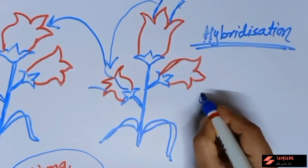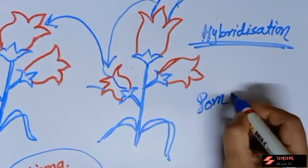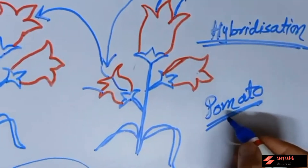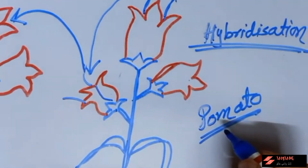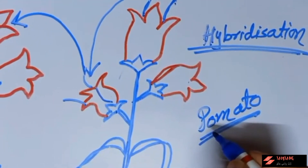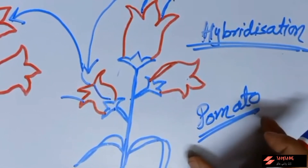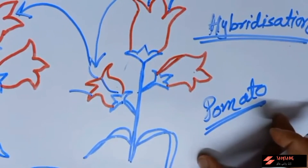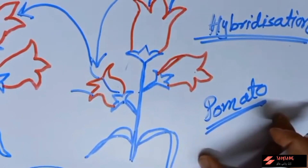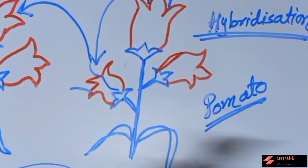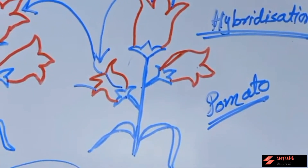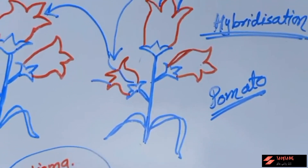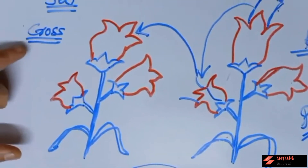For example, pomato is a plant produced by cross-pollination between potato and tomato. In that plant, we can obtain two different fruits at the same time: tomato can grow on the stem and potato can grow on the roots of the same plant. However, for our study we only need to focus on self-pollination and cross-pollination.